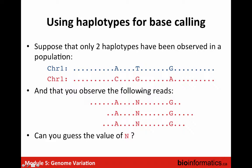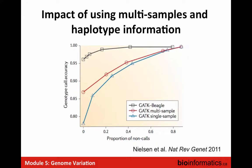If you have high coverage, you don't need haplotype calling as much. But at 5x coverage or 3x, every position may only be covered a few times per sample. If you've only observed a variant once in one sample, you can't distinguish error from real change. Seeing the same change across many individuals in a multi-sample call gives you confidence it's real. This multi-sample approach has been shown to substantially improve variant calling at low coverage.